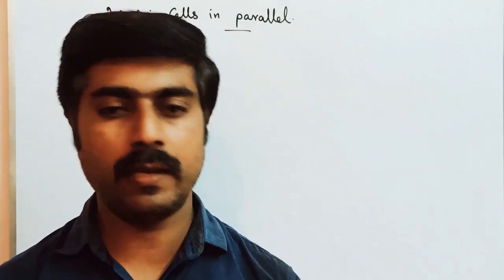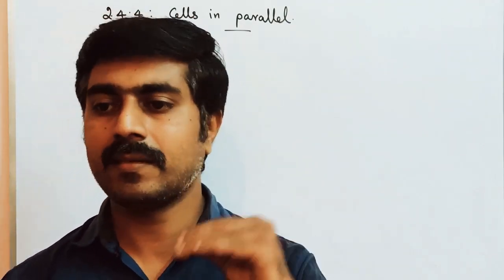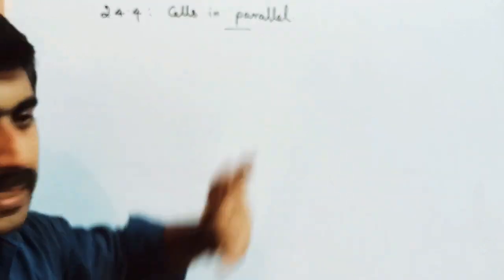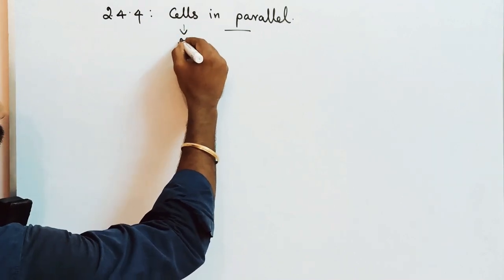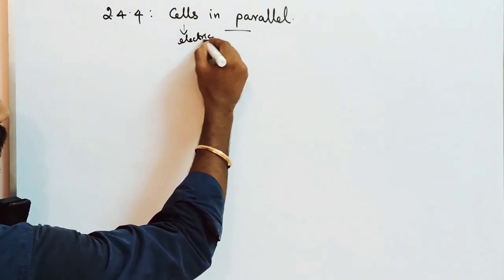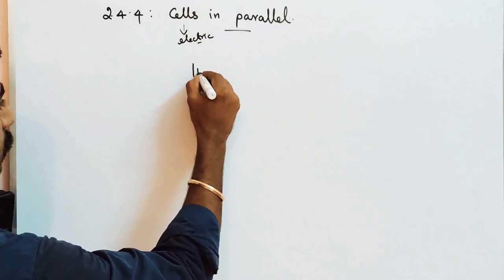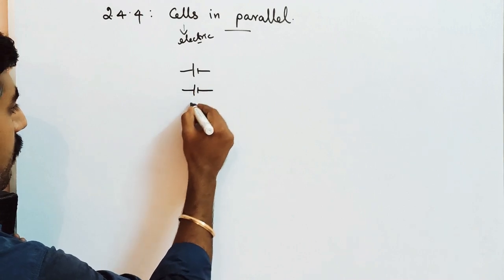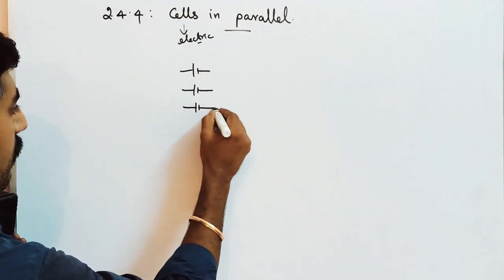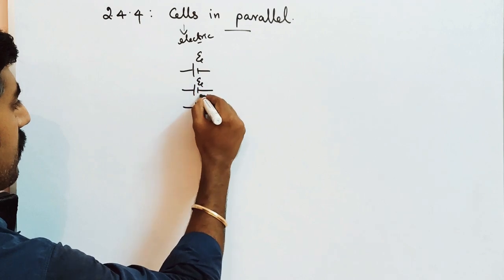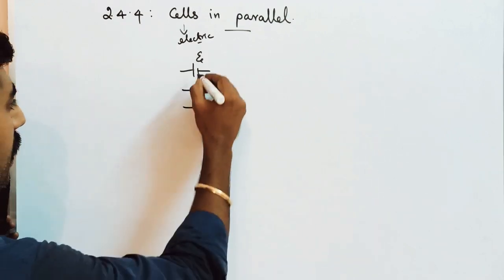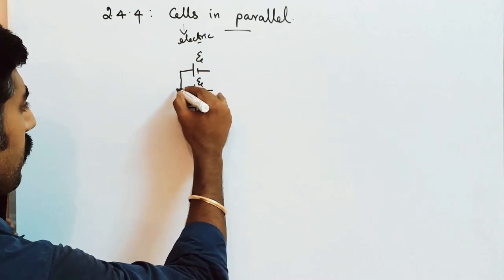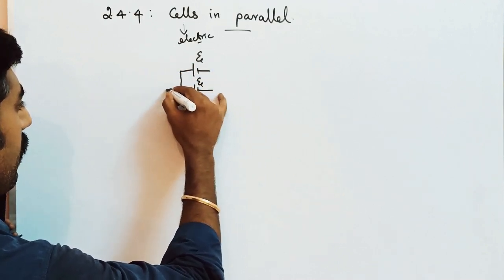Just like we discussed capacitors in parallel and resistors in parallel, now we discuss cells in parallel. Electric cells — first one cell, second one, and this is the third one — all of the same EMF. The positive terminals of all the cells are connected together and meet at a point, that is terminal A.